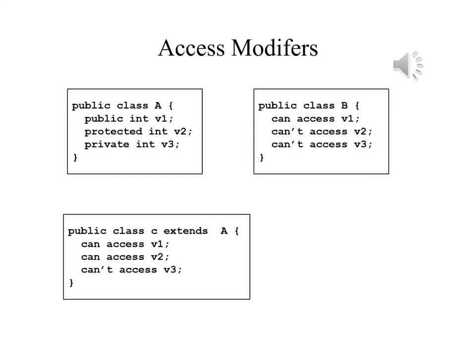The diagram shows three classes. The first one is a public class A, and it has three variables, all integers. V1 is public, V2 is protected, V3 is private. B is also a public class with no direct relationship with A. Because V1 is public, B can access V1. However, not being related to A, it cannot access the protected integer V2, and because V3 is private, it can't access that either.